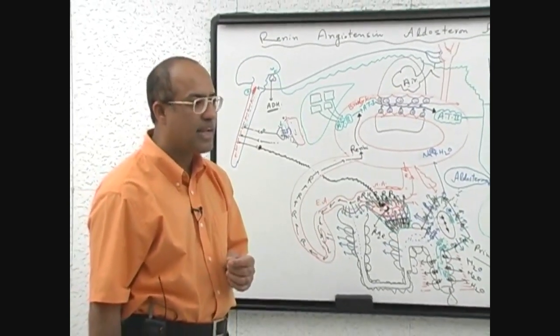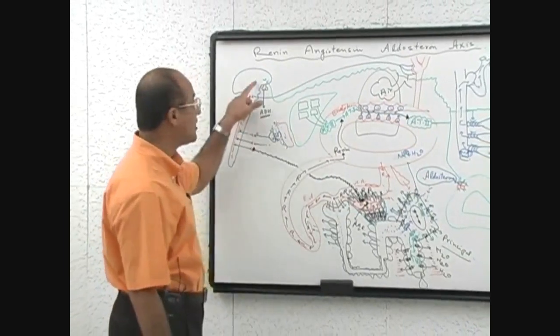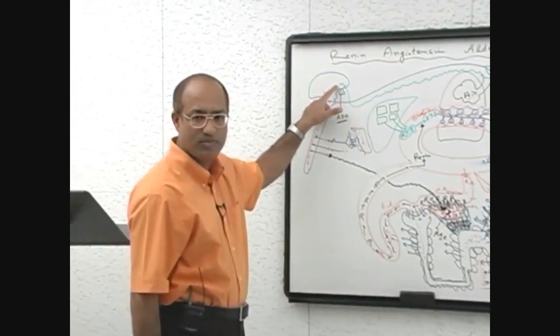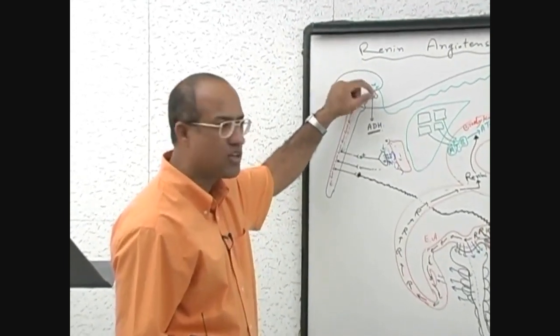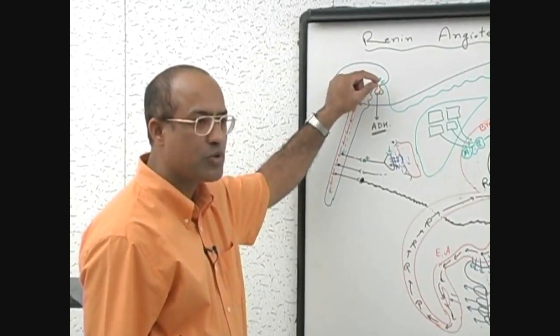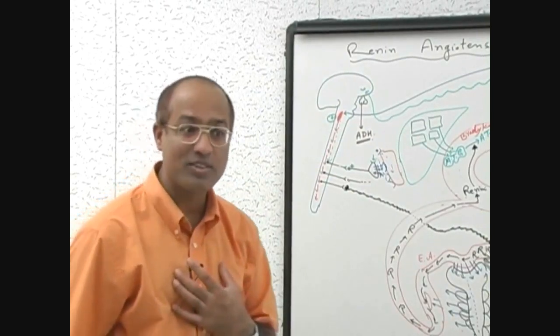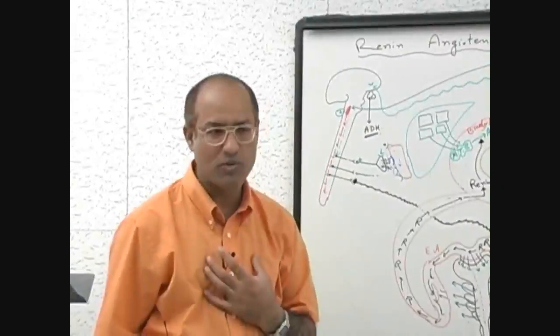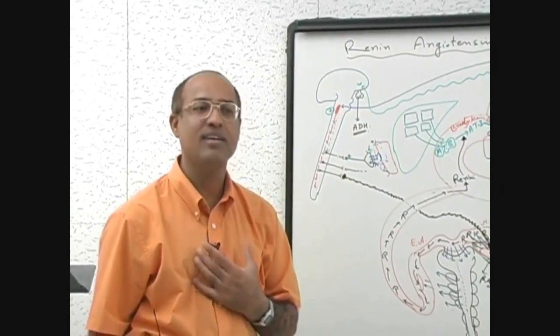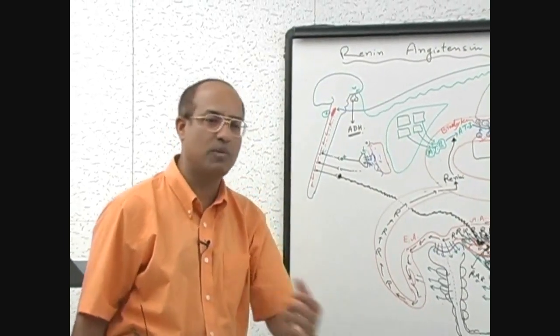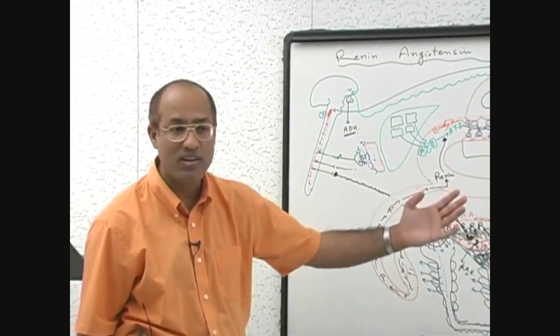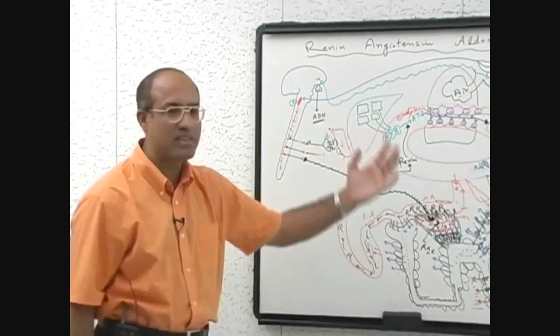And we should not forget something very important. Angiotensin-2 has receptors on the central thirst system. So when angiotensin-2 works on those groups of neurons which control the feeling of thirst, a patient who is bleeding will feel thirsty. Of course, he will ask for water, and if available, he will take the water and try to increase blood volume.